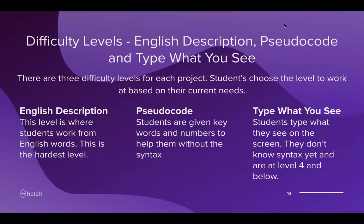There are three difficulty levels: English description, pseudocode, and type what you see. English description is the hardest level — students won't start there. Pseudocode breaks it down to the first level where students learn about syntax and keywords without having every word written for them. Finally, type what you see is where students literally type what they see into the coding area. This teaches fine motor skills related to coding and builds recognition of various skills as they move forward.